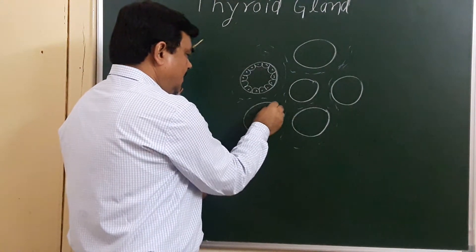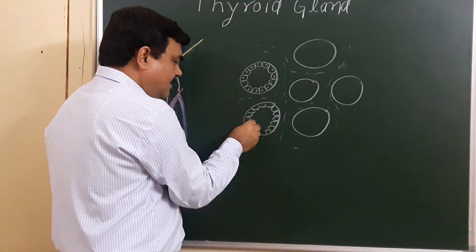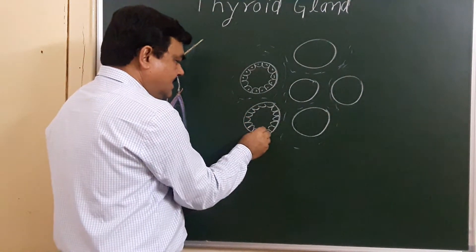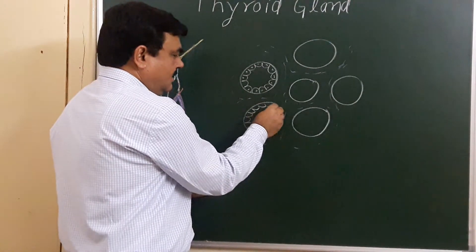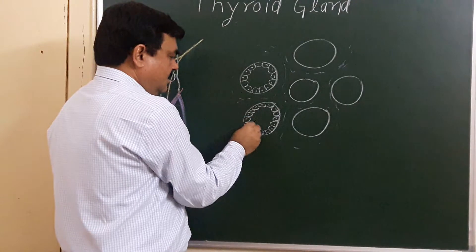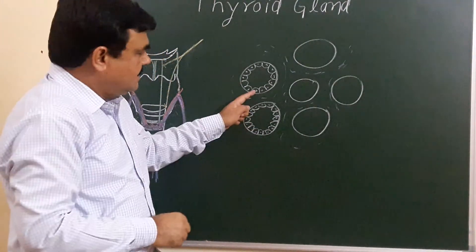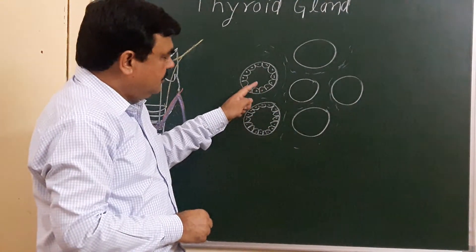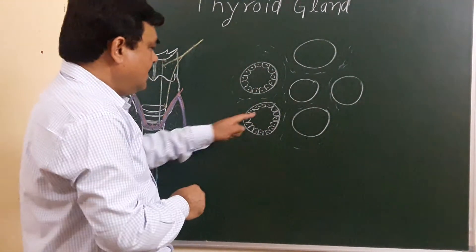In the hyperactive position, the cells become elongated and columnar. Usually, in moderate activity, the cells are cuboidal.